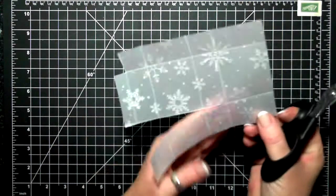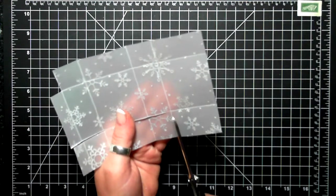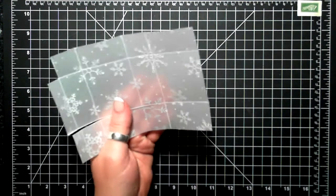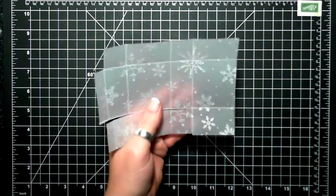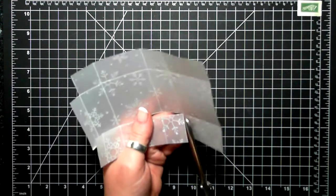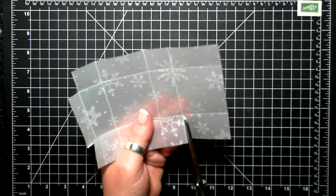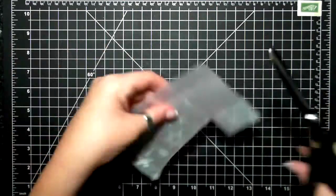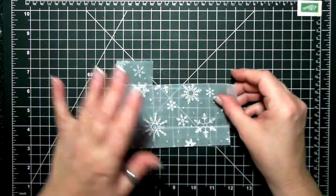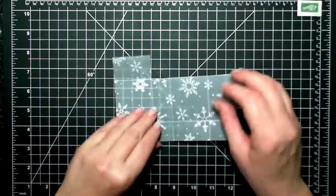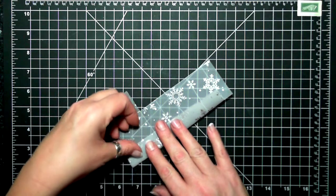Then we'll score, or then we'll fold and burnish, and then we'll cut out a little bit more. I find it easier when I have to cut a big long piece to do it when it's not folded, especially when I'm using vellum.